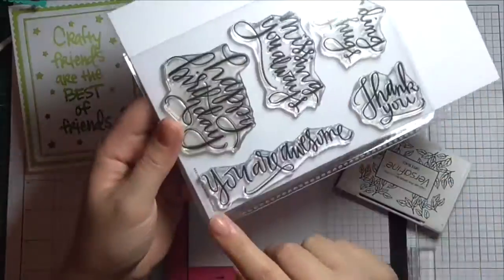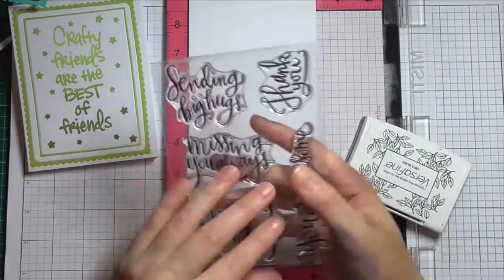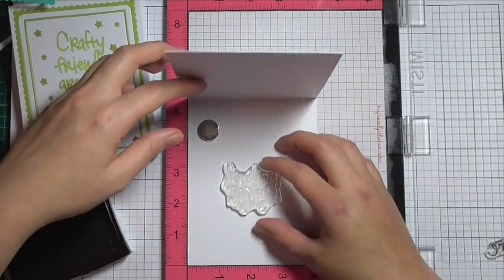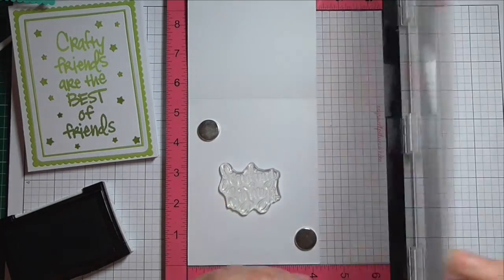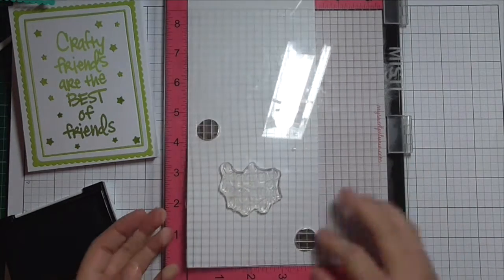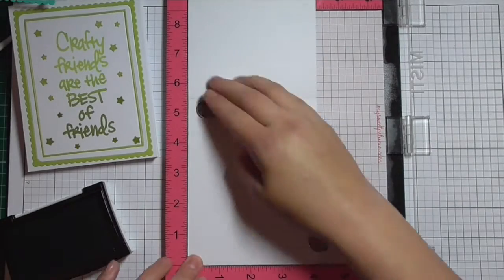So just before we finish I decided to add a sentiment. I did consider using the you are awesome sentiment from Simon Says Stamp but then I decided on the sending big hugs. I just wanted to show how quick and easy it is to stamp down multiple times using the MISTI tool.